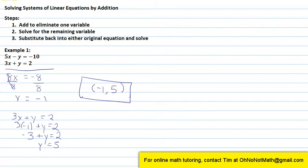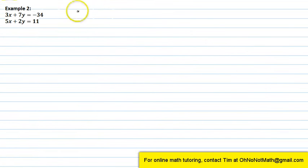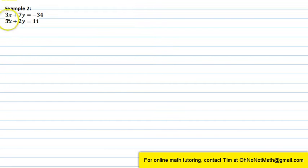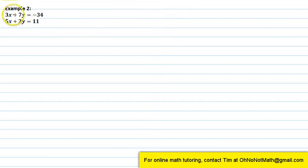Let's try another example. We have 3x plus 7y equals negative 34, and 5x plus 2y equals 11. This one's not quite as easy. If we add these together, we'd have 3x plus 5x equals 8x, so the x variable doesn't eliminate. And 7y plus 2y equals 9y, so the y's don't drop out either. What we need to do is multiply one or both equations by something so that when we add, one variable is eliminated.